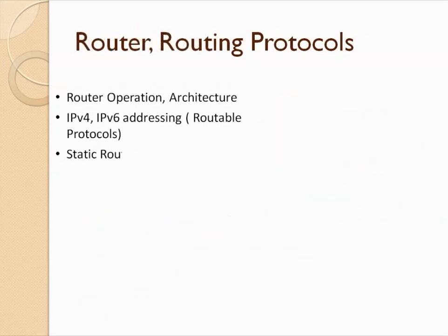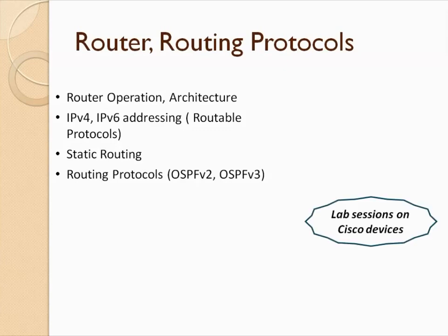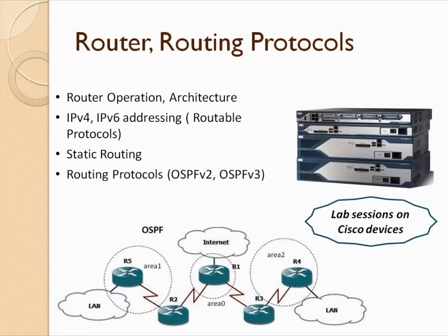Next comes routers and routing protocols, approached similarly to switching. We'll learn what a router is, how it operates, its internal architecture, and the information bases it uses — Routing Information Base and Forwarding Information Base. We'll also go through security details like ACLs for controlling user access to destination networks, and QoS policy — all the things a router checks when a packet enters.